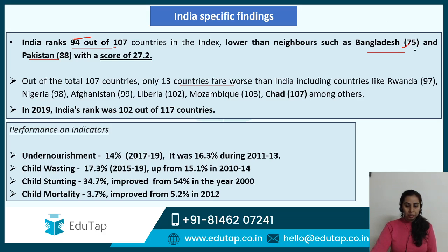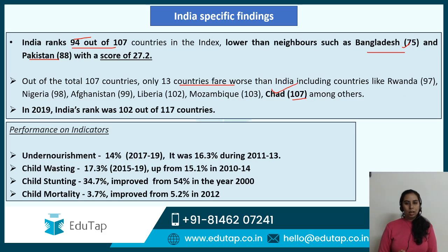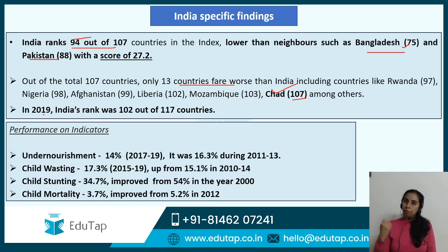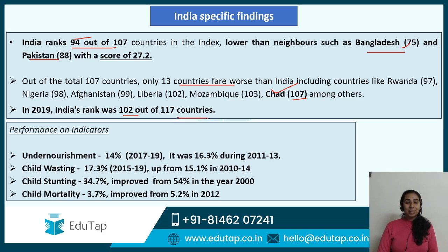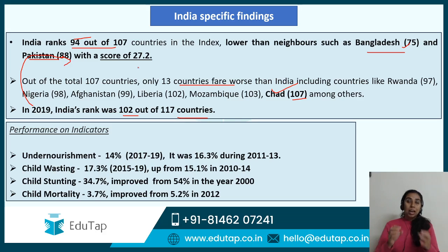Another very important thing: the top rank has been taken by 17 nations. You also have to know the last rank — 107th rank has been taken by Chad. India's rank is 94. Now, has India improved compared to the previous year? India's rank was 102 out of 117 countries last year. India has not done well — the number of countries has decreased, but India's rank has actually increased, meaning performance worsened. Whenever you read India's rank in any index, please note the top nation, the last nation, and India's rank compared to the previous year.